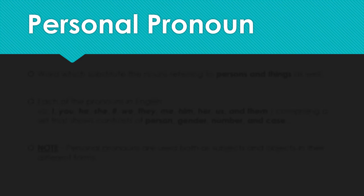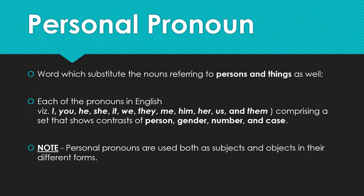Now we will see personal pronoun in detail. The words which substitute the nouns referring to persons and things come under the category of personal pronoun. Each of the pronouns in English — viz. (namely) — I, you, he, she, it, we, they, me, him, her, us, and them — comprises a set that shows contrasts between person, gender, number, and case.